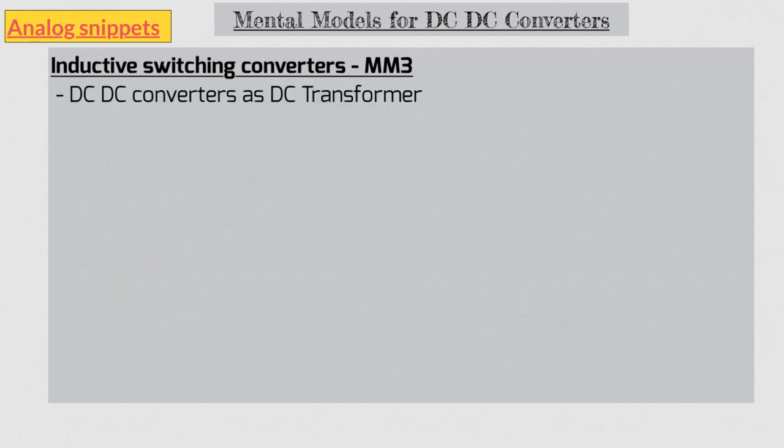Okay, let's now move to our third and final mental model. We can think of a DC to DC converter as a DC transformer. Now DC transformer is an oxymoron. Because a real transformer doesn't work with DC voltages. In fact, that was one of the main reasons why AC was preferred over DC for electric grids. But we are making a mental model here. And for that purpose it works rather well.